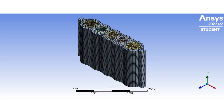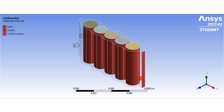This is how the mesh is generated for this channel. These are where the boundary conditions have been applied: inlet, outlet, and the wall or cell boundary.